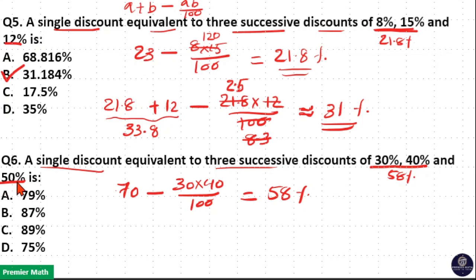Now 58% and 50%. 50% plus 58% minus 50 into 58 divided by 100. Now 50 goes 2 times in 100. 2 goes 29 times in 58.